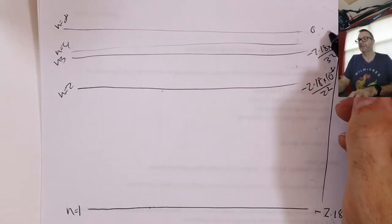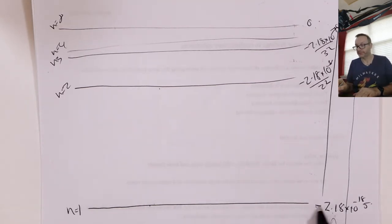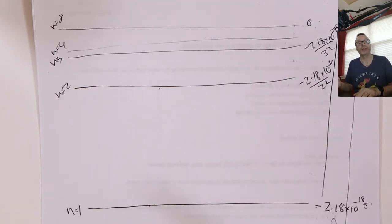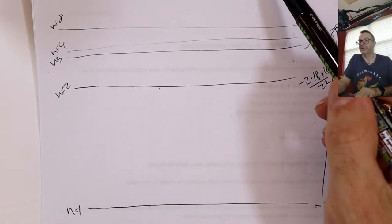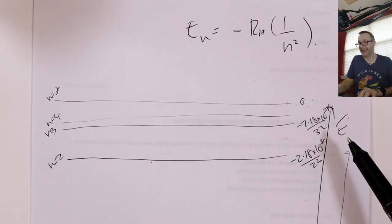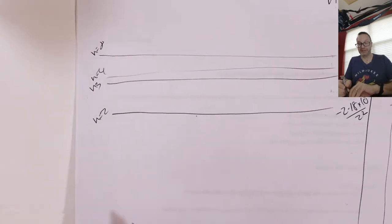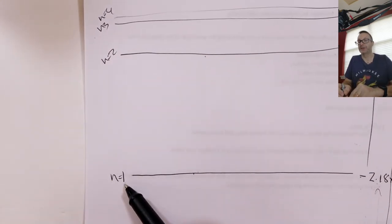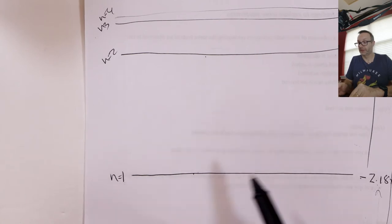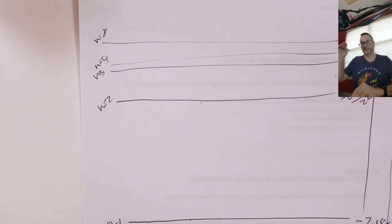The number gets smaller and smaller in terms of its minus value — it's getting closer to zero, closer to the top of the diagram. So we've been able to label how far from the nucleus these energy levels are in terms of energy using the Rydberg constant RH = 2.18×10⁻¹⁸ joules, divided by the principal quantum number squared.